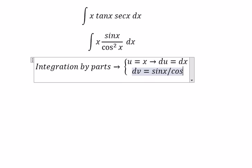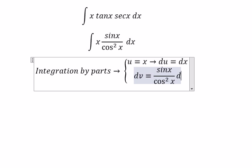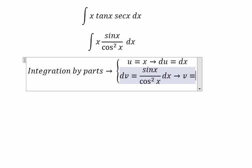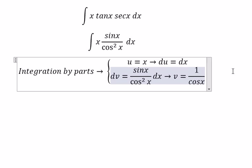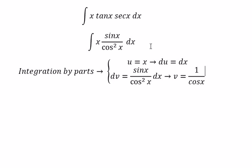sin x over cos² x dx, so we get v equal to 1 over cos x. So we